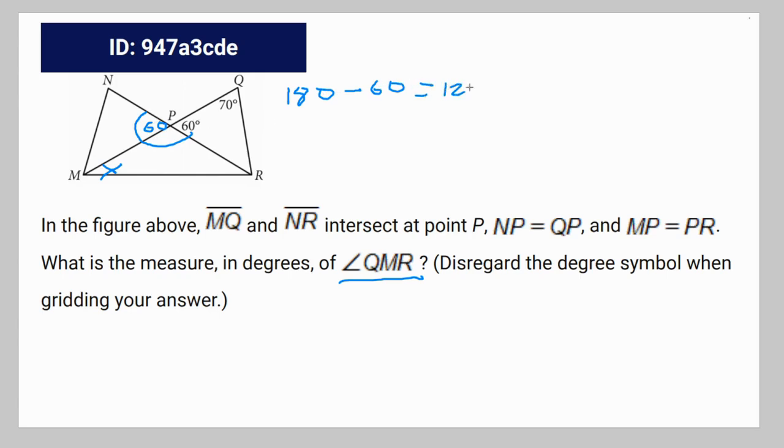And knowing how it gives us the fact that MP is equal to PR, that means this entire thing is an isosceles triangle. Therefore, angle QMR is equal to the same thing as angle MRM.